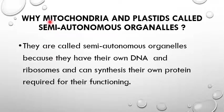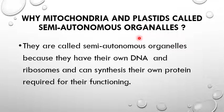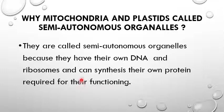An important question: why are mitochondria and plastids called semi-autonomous organelles? It means they can perform their own activity independently from the cell. This is because they have their own DNA and ribosomes and can synthesize their own proteins required for their functioning. So they are not completely dependent on the cell — that is why they are known as semi-autonomous organelles.